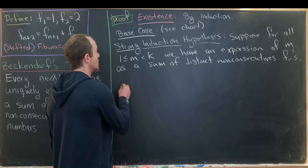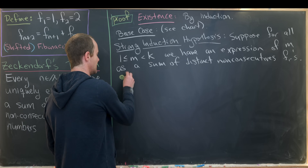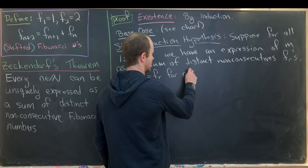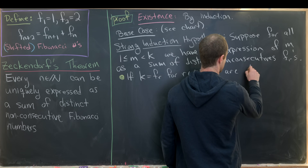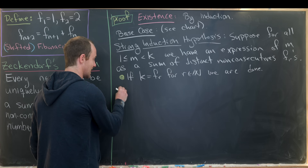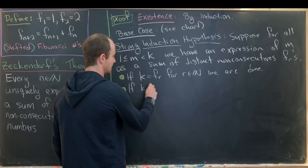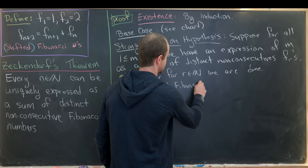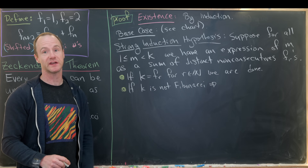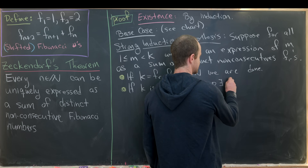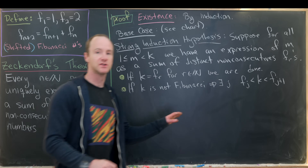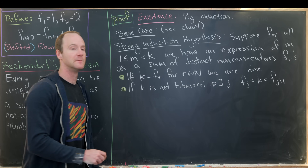We consider the number k, which splits into two cases. The first is very quick: if k is itself a Fibonacci number — i.e., k equals Fᵣ for some natural number r — we are done, since it's already expressed as a single Fibonacci number. The second case is if k is not a Fibonacci number.